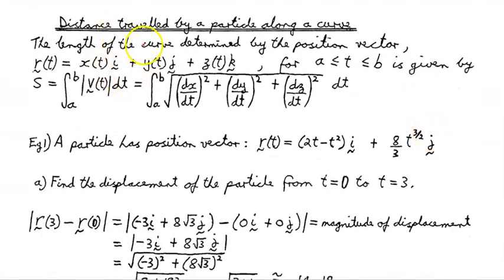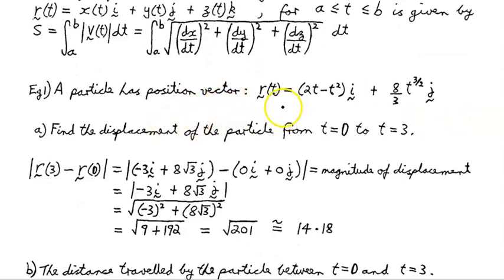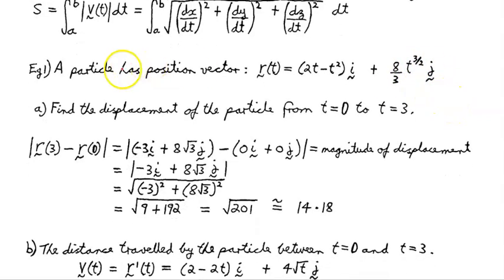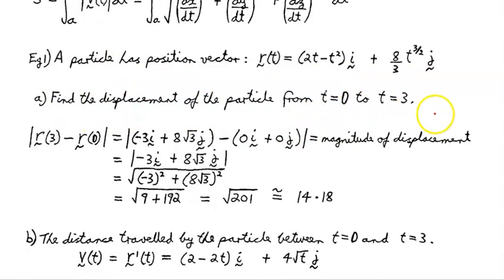Let's look at some examples now. The length of the curve determined by the position vector R of t equals X of t i plus Y of t j plus Z of t k in three dimensions, for t between a and b, is given by s equals the integral from a to b of the absolute value of v of t dt. Now, a particle has position vector R of t equals (2t minus t squared) i plus (8/3 · t^(3/2)) j — motion in two dimensions. Part A: find the displacement from t equals 0 to t equals 3, which is R of 3 minus R of 0. At t equals 3 we get the vector negative 3i plus 8√3 j. At t equals 0 the whole thing disappears, so we're just at the origin.